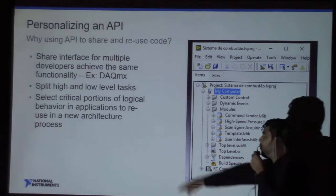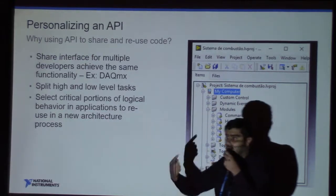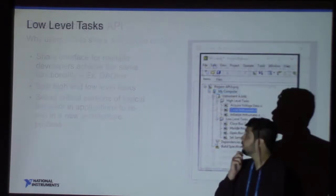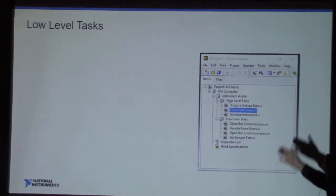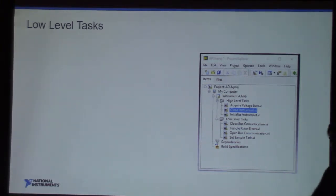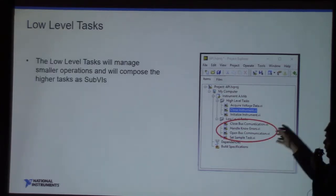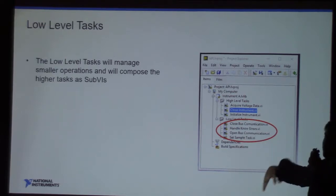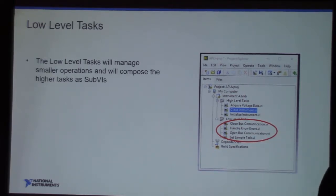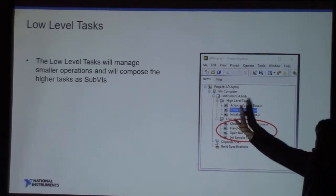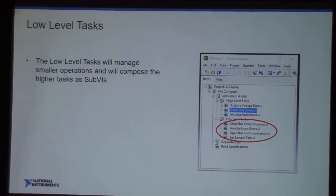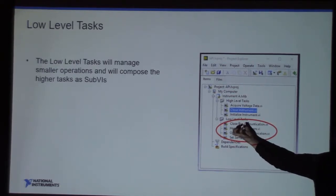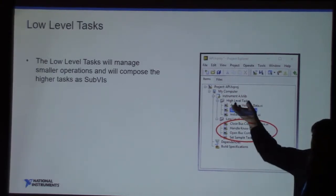You can select critical portions of logical behavior and applications to reuse them in your architectural process. For example, in my real case we had some non-NI instruments and had to create an API for them. I created low-level tasks just for myself — close the bus communication, handle errors, open the bus communication, and set a simple task. For my developer, I just delivered: acquire voltage, close instruments, and initialize instruments. I encapsulated this inside the API and gave that to my developer to achieve the same functionality as before.